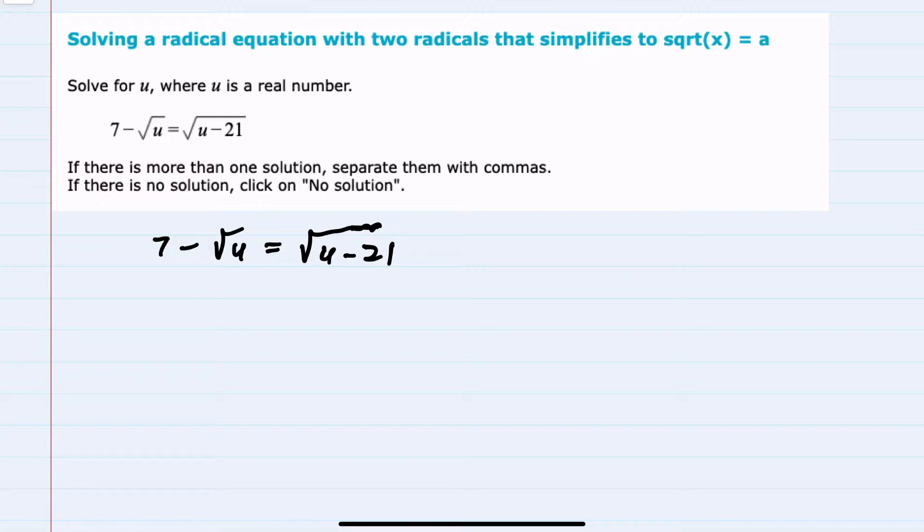In this example, we are solving for u, and we have two radicals, one on the left with another term, and one on the right that has a larger expression underneath a radical.